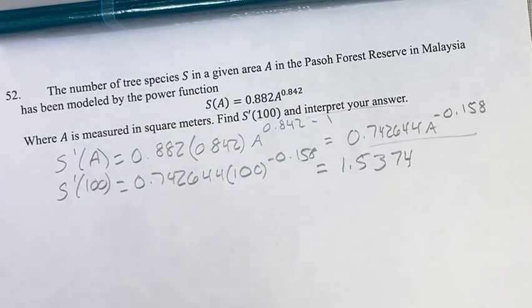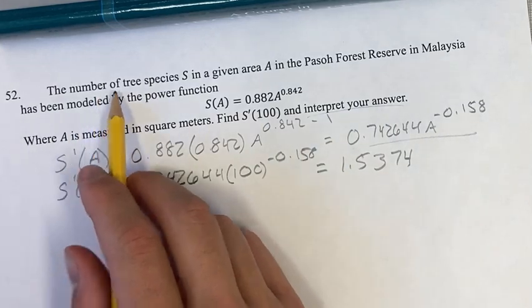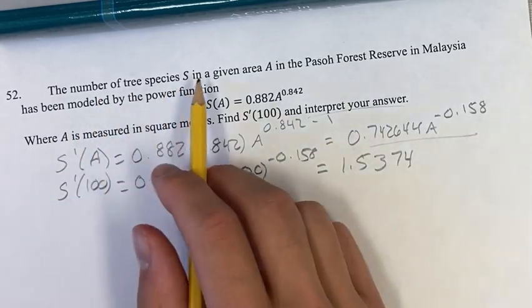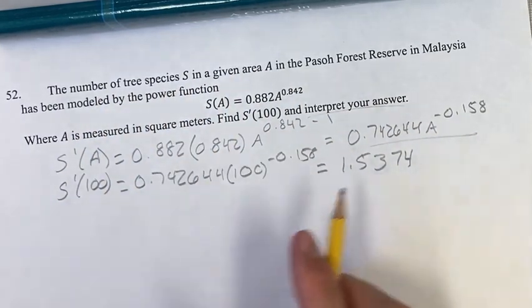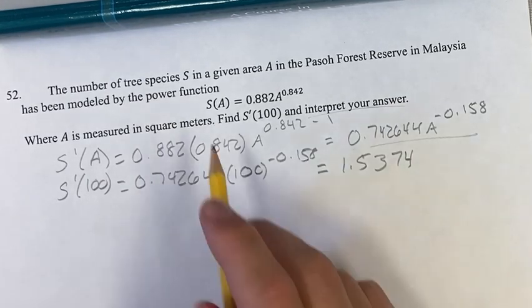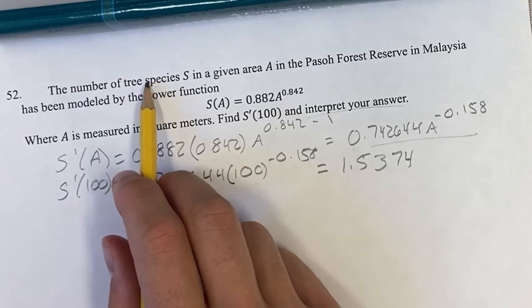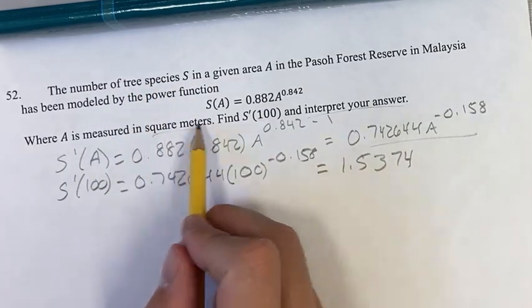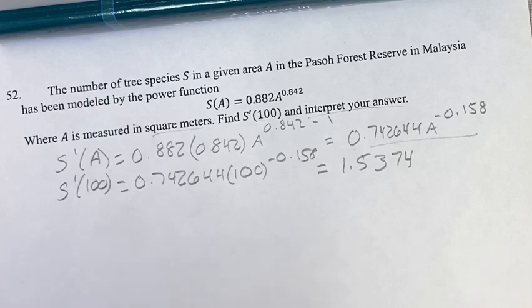We also want to interpret the answer. So this function s is giving the number of tree species in a given area a. So this is going to be the rate of change of s over a. So this is the increase in tree species per increase in one square meter a.